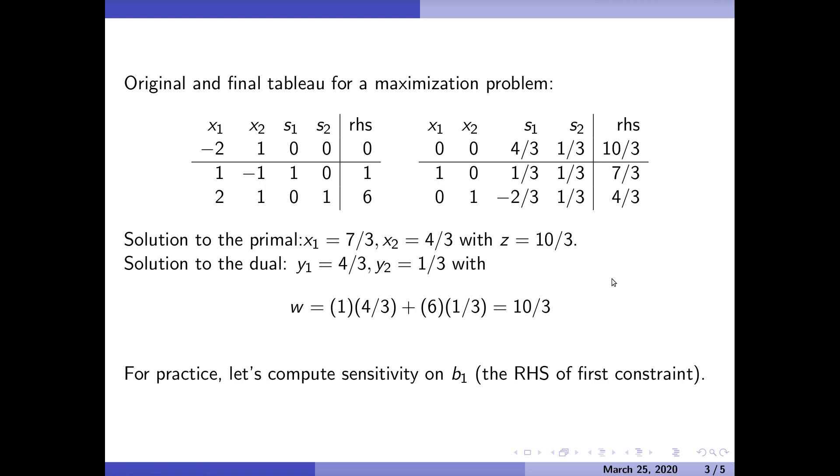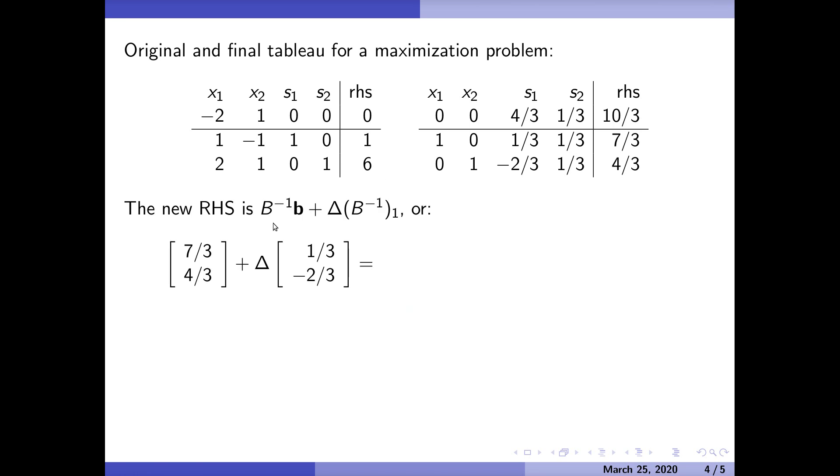Let's compute some sensitivity analysis now. B_1, for example, that's the one I'm going to change. The new right-hand side is going to be B inverse B plus delta times the first column of B inverse. We're taking our old B and adding delta times the first column of B inverse. If we do that, we want this to be greater than or equal to zero, so delta is between minus two and seven. This is just using the previous formula.